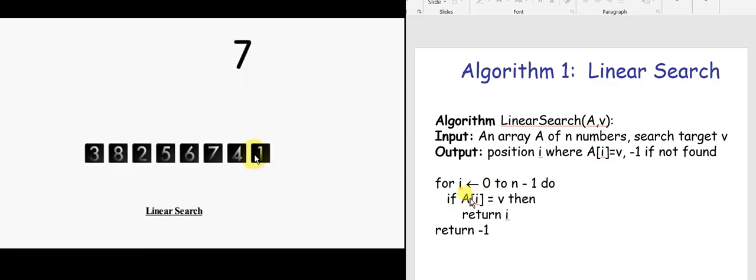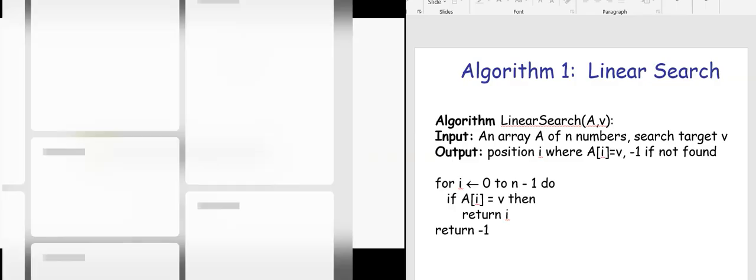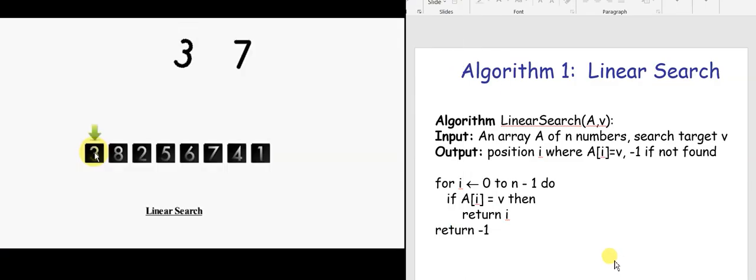We are comparing each of the elements based on the index value. Now we are about to start the example. What happens here? 3 is compared with 7, and we do not find any similarities.